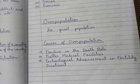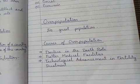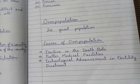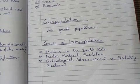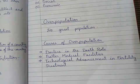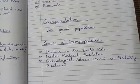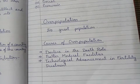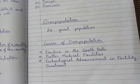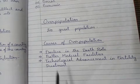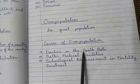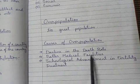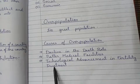The third cause is technological advancement in fertility treatment. There was a time when some parents faced the problem of fertility — they were unable to conceive a baby. But now, because of better medical science and medical facilities available, they get treatment. There is a fertility treatment method by which they get babies. There are many hospitals that specialize especially in this area. So these are the main causes of overpopulation: decline in death rate, better medical facilities, and technological advancement in fertility treatment.